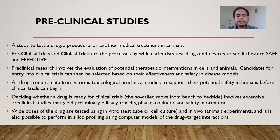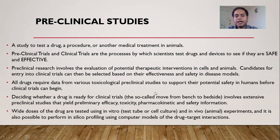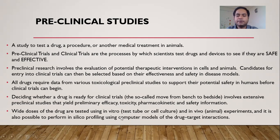Before proceeding to a clinical trial study, your drug should possess less toxicity and be effective. All drugs require data from various toxicological pre-clinical studies to support their potential safety in humans before clinical trials can begin. Deciding whether a drug is ready for clinical trial — also called moving from the bench to bedside — involves extensive pre-clinical study that yields preliminary efficacy, toxicity, pharmacokinetic, and safety information. Toxicity analysis is the primary concern in both pre-clinical and clinical trials.